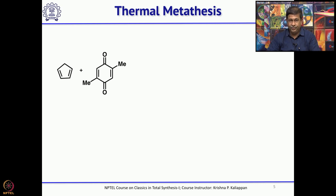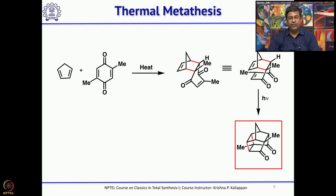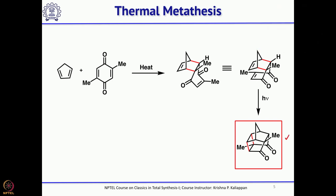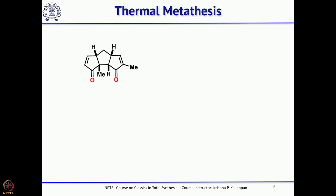Now let us see how this core structure was taken further for the total synthesis of hirsutene. Instead of benzoquinone, if you use 2,5-dimethylbenzoquinone, you will get a tricyclic intermediate. This upon intramolecular [2+2] cycloaddition under photochemical conditions will give a strained compound. Then you do the flash vacuum pyrolysis and you get a tricyclic compound where, compared to the triquinone discussed earlier, we have two additional methyl groups — one is an angular methyl group and the other is attached to an sp2 carbon.